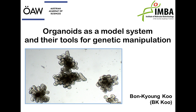Today I'm going to talk about organoids as a model system, and I'll basically introduce some genetic engineering tools so that you can utilize organoids as a model system in your laboratory. First of all, I'd like you to pay attention to the picture in the first slide — these are mouse intestinal organoids with many budding structures. To understand this organoid system well, it is very important to understand the gut biology. I will start by introducing how stem cells in the gut are working, and then move on.